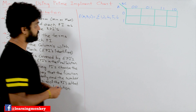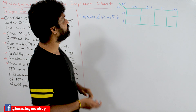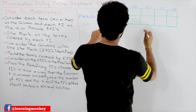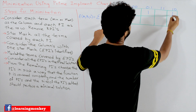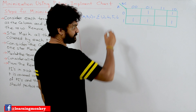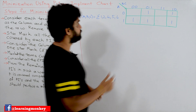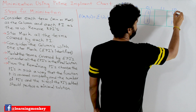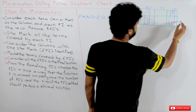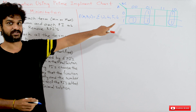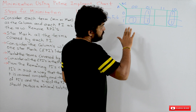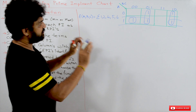Now we solve the example. This is a three-variable function and this is the K-map for three variables. We mark all the terms: 1 (001), 2 (010), 4 (100), 5 (101), and 6 (110). Then we find the prime implicants — the maximum possible sub-cubes. These sub-cubes are all the possible prime implicants which cover all the terms of the function.